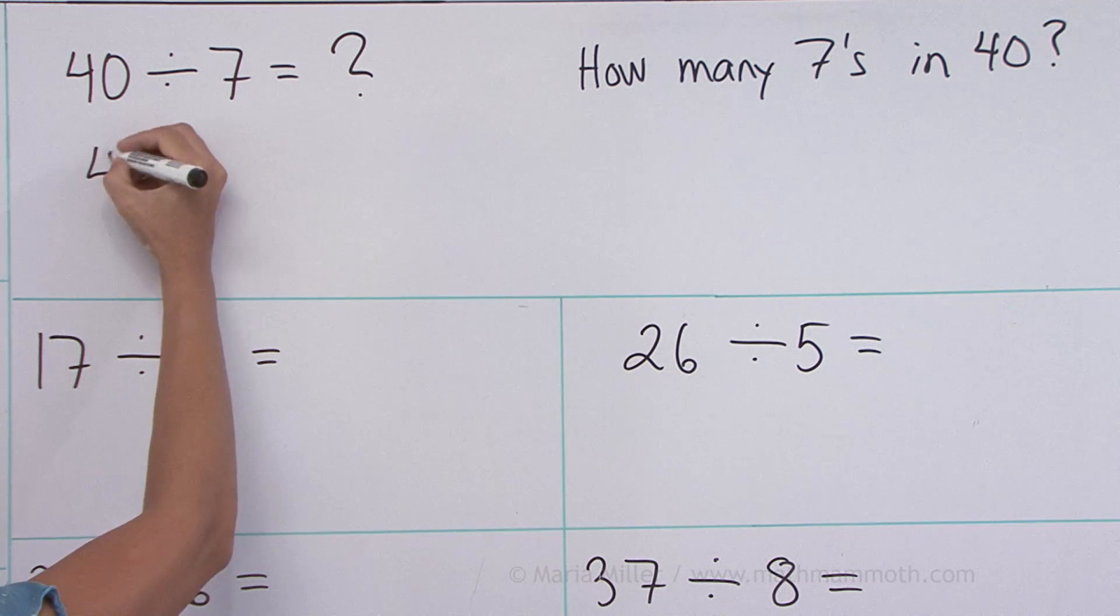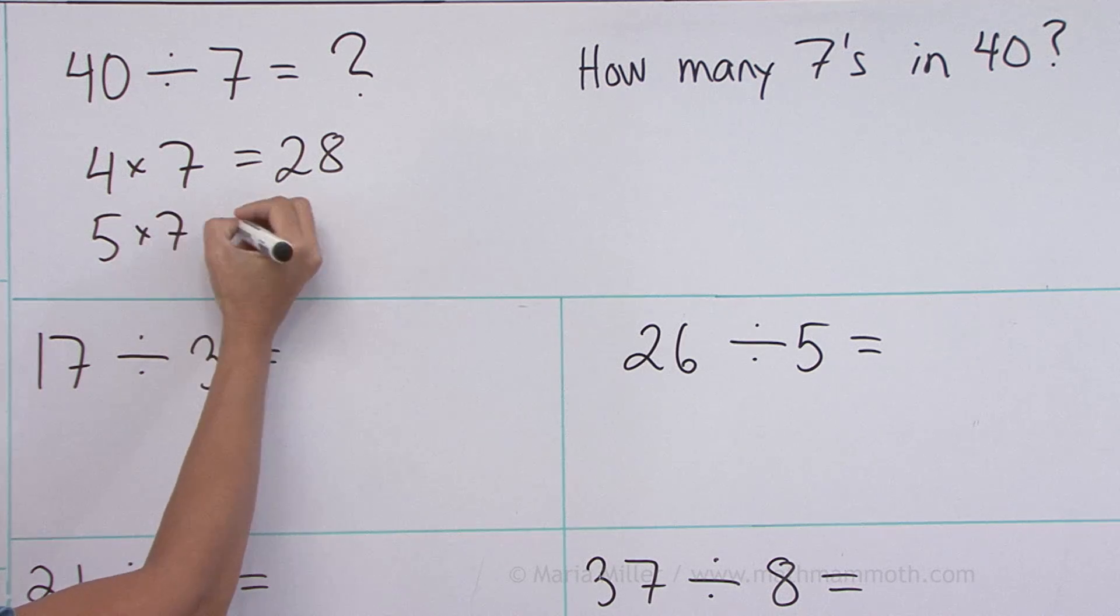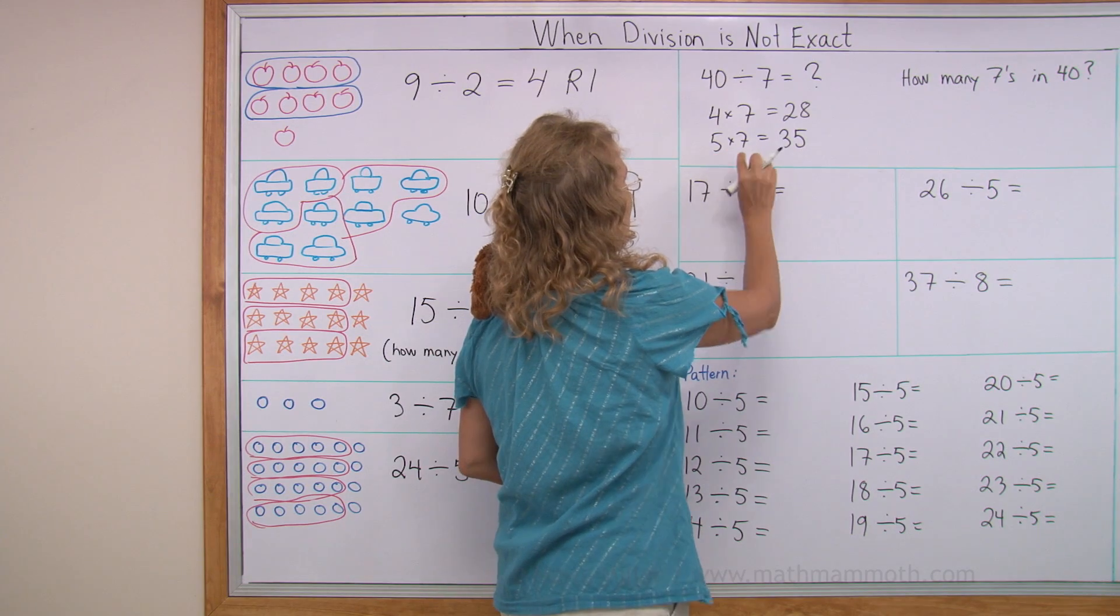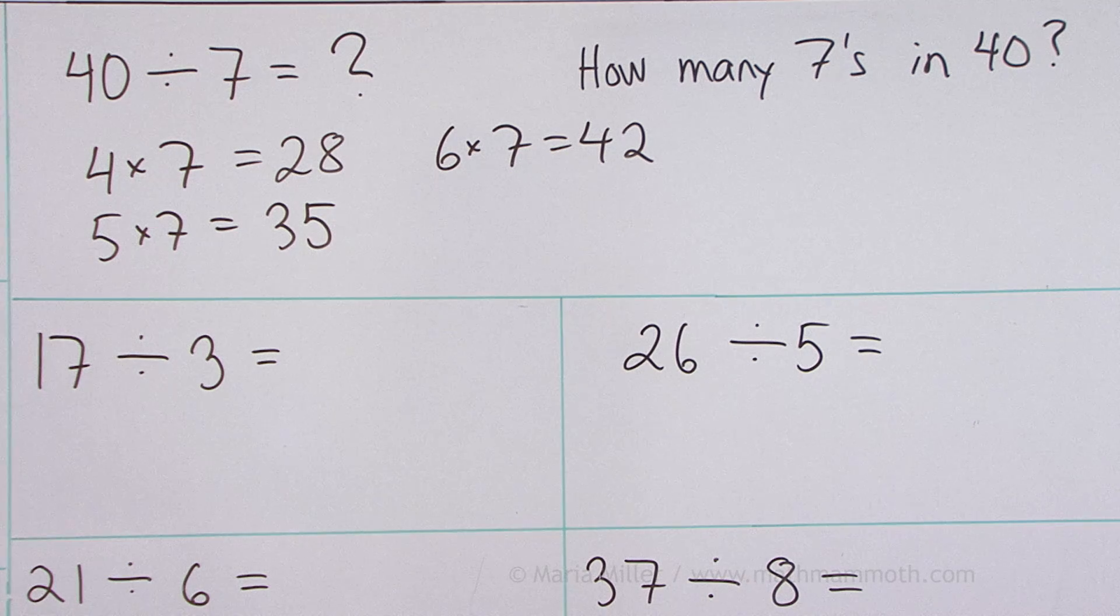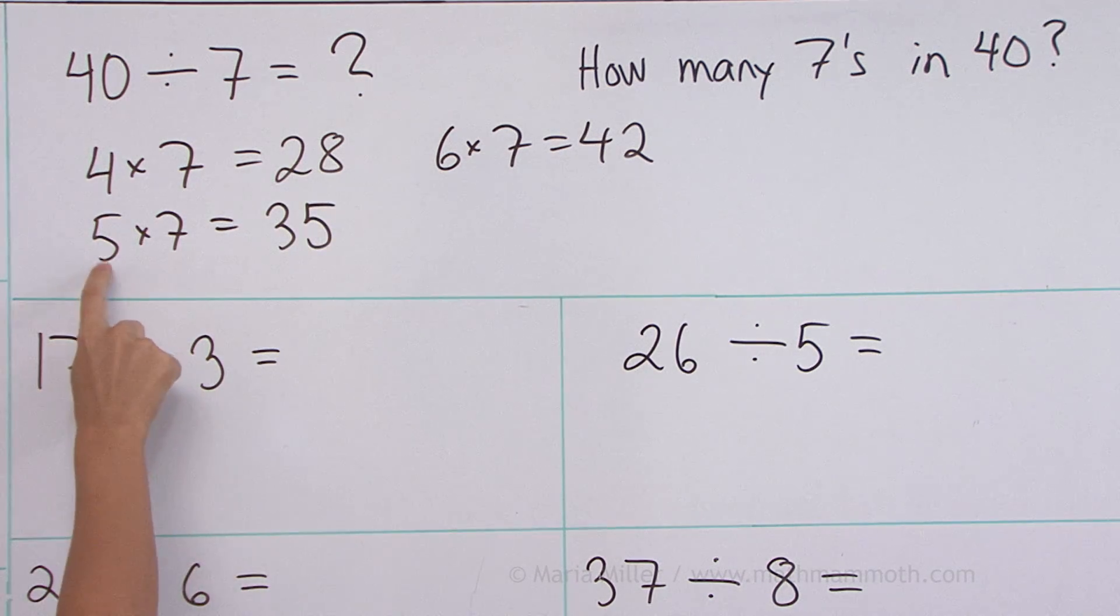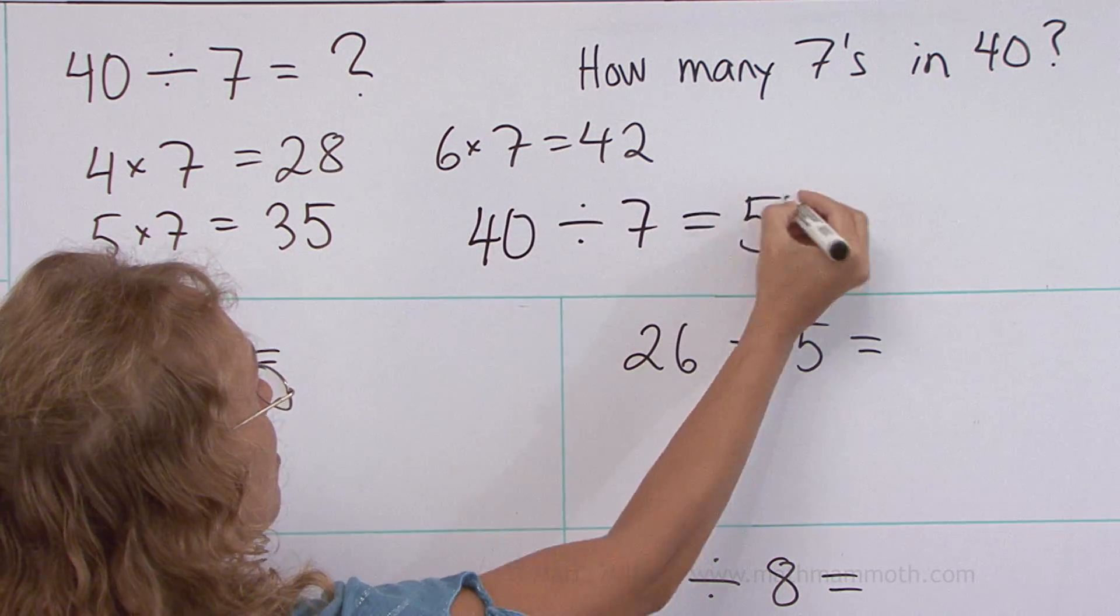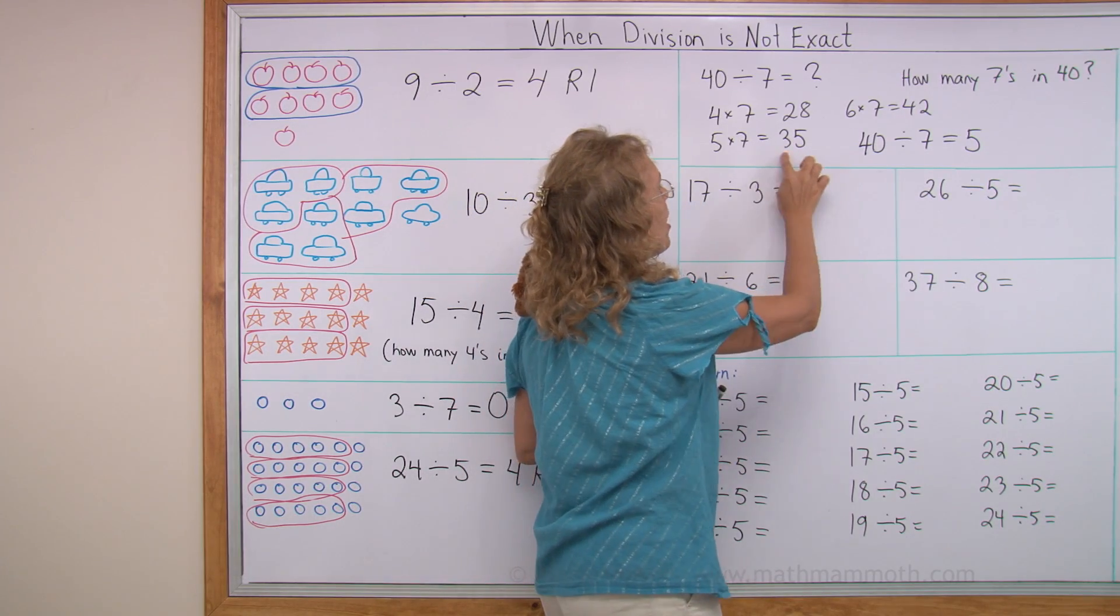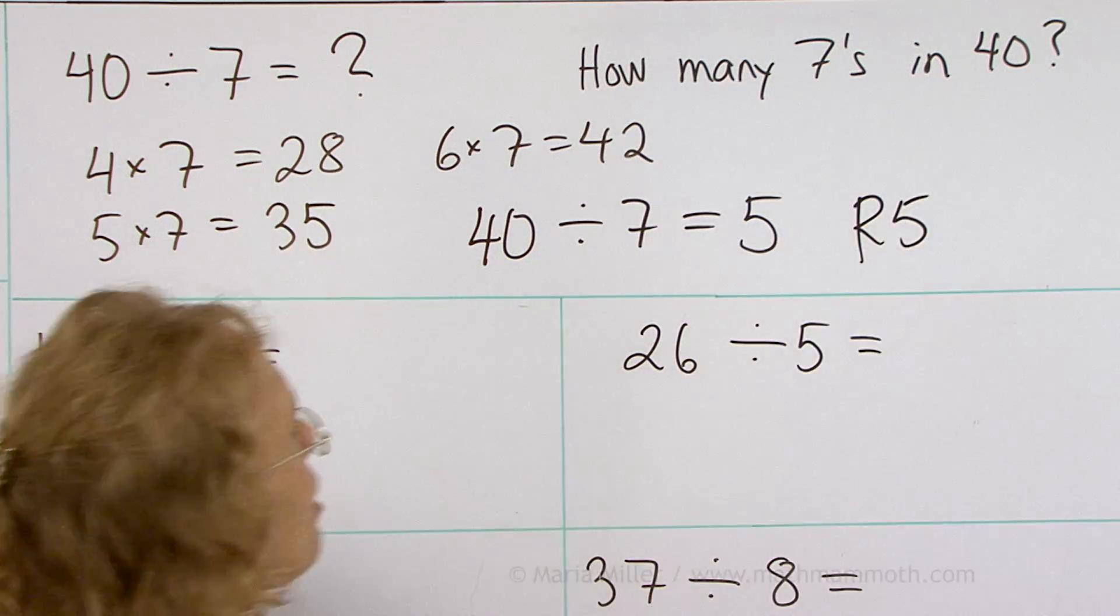Like for example, four times seven. Four sevens makes twenty-eight. And five sevens makes thirty-five. We are not yet up to forty. Forty has at least five sevens. And then six times seven, forty-two. Now we went over forty. So in forty there are not six sevens. Instead the answer is five. So forty divided by seven equals five, because there's five sevens in forty. Five times seven is thirty-five. And then look at the difference of thirty-five and forty. That is your remainder. The remainder is five.